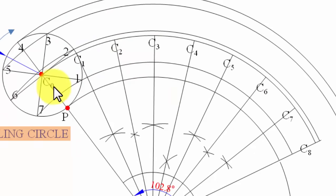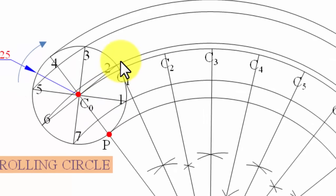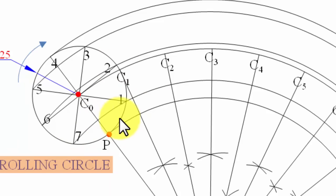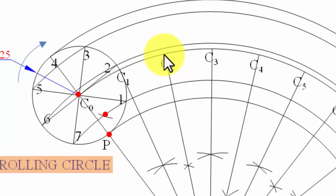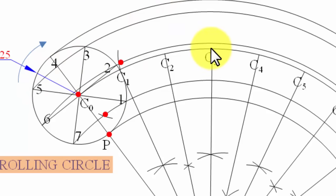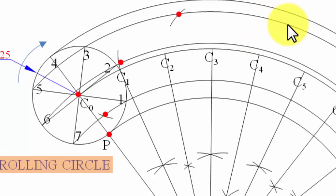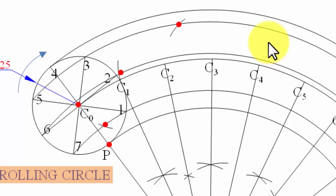When the circle rolls and C0 moves to C1, we set the compass to 25 mm and with C1 as center, cut the arc passing through point one — giving point P1. With C2 as center, cut the arc through point two — giving P2. Similarly, C3 gives P3. For C4, the arc just touches at the outermost position — that is point P4.